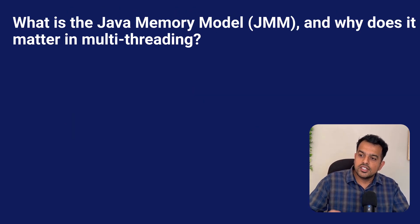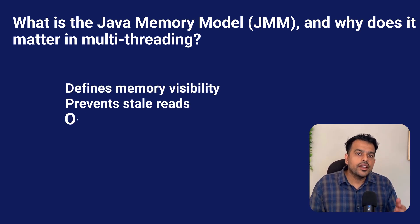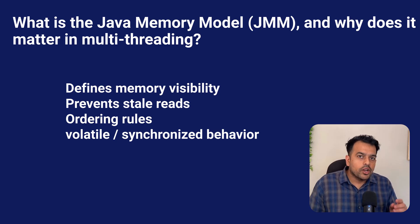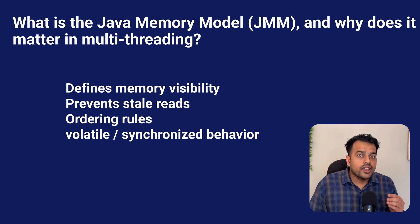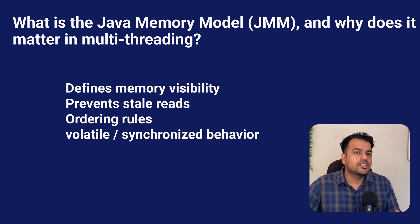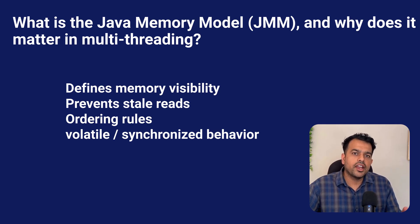The next question is: what is the Java Memory Model (JMM) and why does it matter in multi-threading? The Java Memory Model explains how threads interact with memory. Without the JMM, one thread might update a variable and another thread might never see the new value. That's why concepts like visibility and happens-before exist. Volatile, synchronized, and final follow specific JMM rules to guarantee correct behavior. For example, volatile ensures visibility, while synchronized ensures ordering and atomicity as well. The JMM defines how caches and main memory interact with Java threads. Most weird multi-threading bugs — like stale reads or out-of-order instruction execution — happen because developers don't understand the JMM. If you understand the JMM, you automatically write safer multi-threaded code.